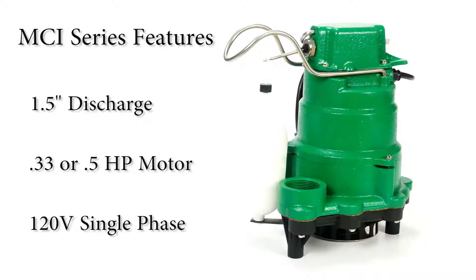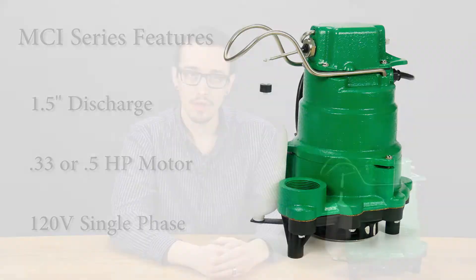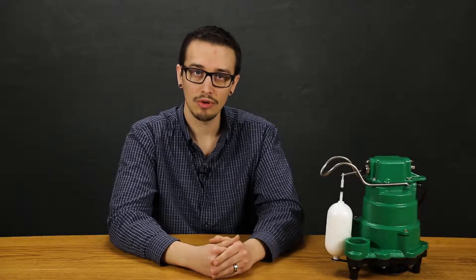An inch and a half discharge comes standard on these pumps. The MCI series utilizes either a one third or one half horsepower motor and is only available in 120 volt single phase. The motor housing is oil filled for permanent lubrication and optimal cooling of the motor. This series utilizes a shaded pole or squirrel cage motor which eliminates the need for failure prone switches and relays.